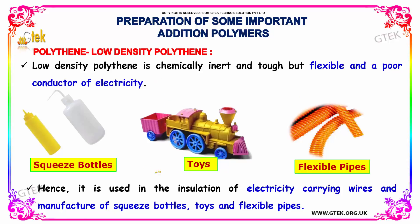Hence, low density polythene is used in the insulation of electricity-carrying wires and in the manufacture of squeeze bottles, toys, and flexible pipes.